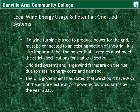Grid-tied systems and large wind farms are on the rise due to rises in energy costs and demand, as well as prices and delivery costs of coal because of fuel prices. The United States government has stated that we should have about 20% of the entire electrical grid powered by wind farms by the year 2025.